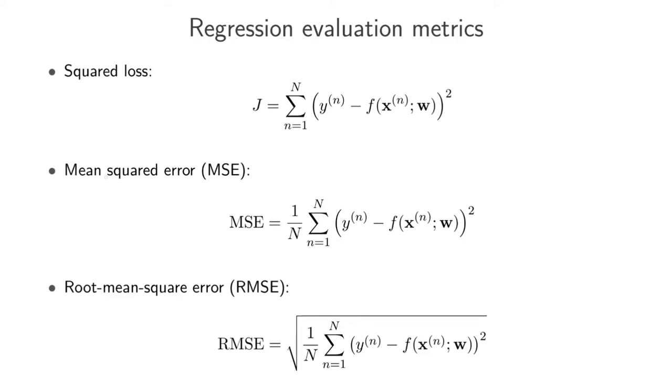So this motivates another metric that is often used or often reported called the mean squared error and this metric normalizes the squared loss with the number of items. So the scale of this metric will be similar irrespective of how many items you have in your test set or your validation set.